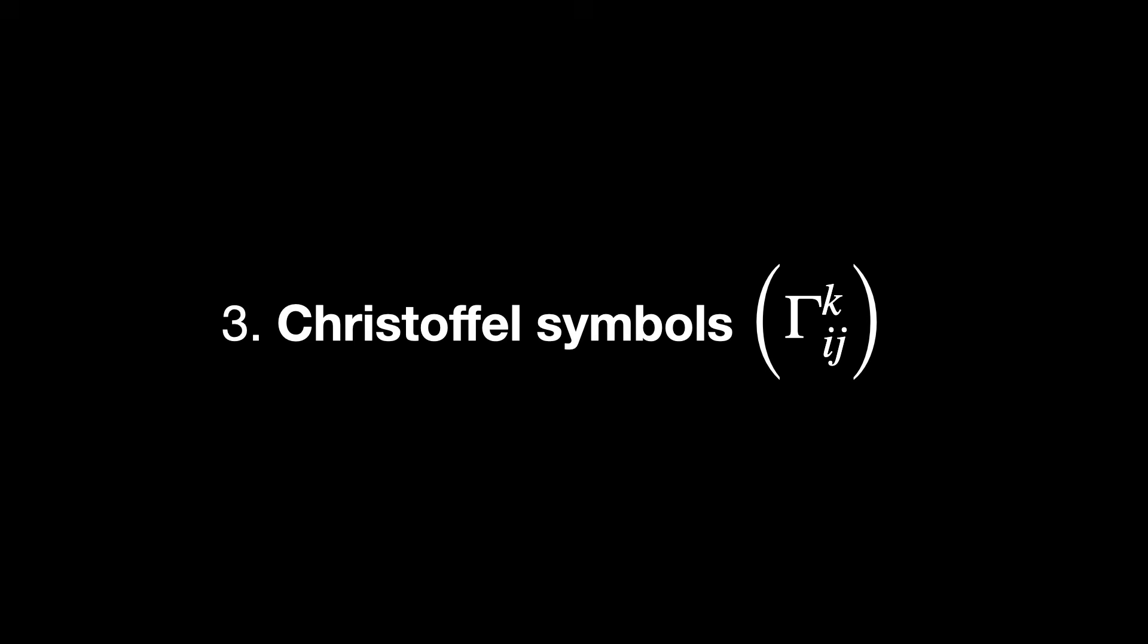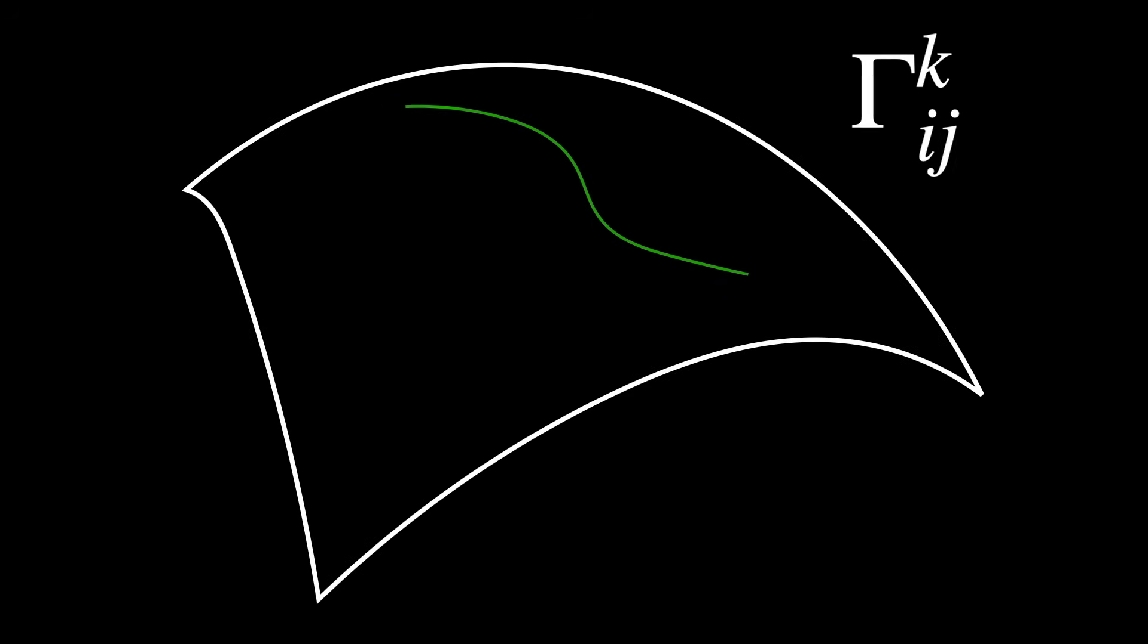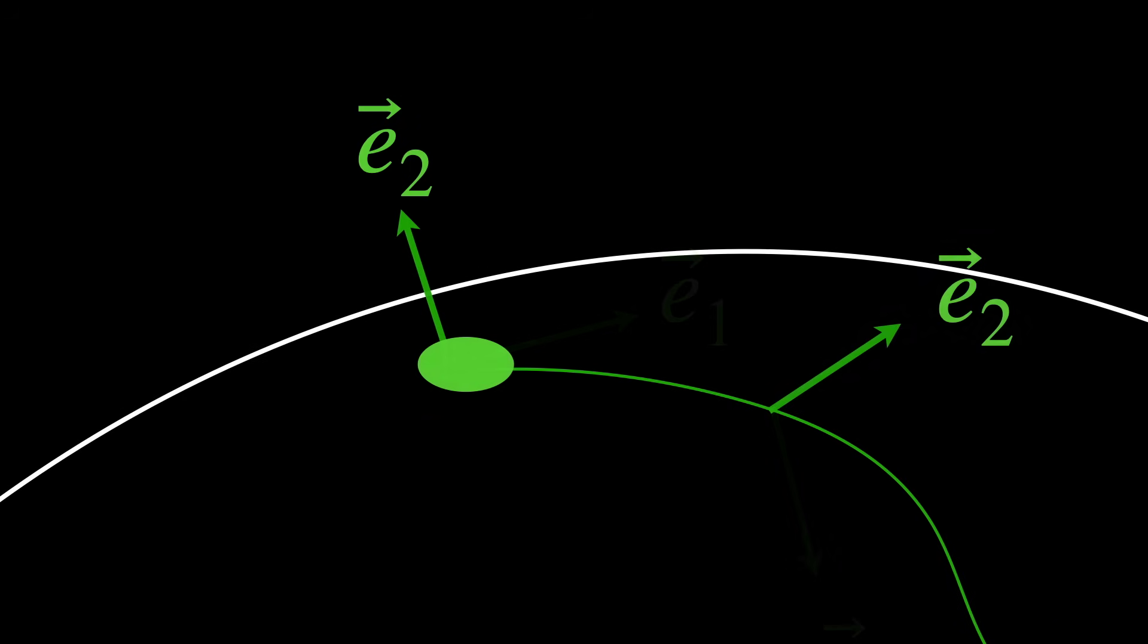Three, Christoffel symbols. These are mathematical objects that track how the coordinate directions tilt across the manifold. They encode how to differentiate vectors smoothly in curved spaces.